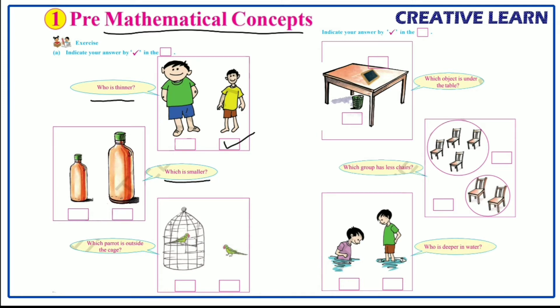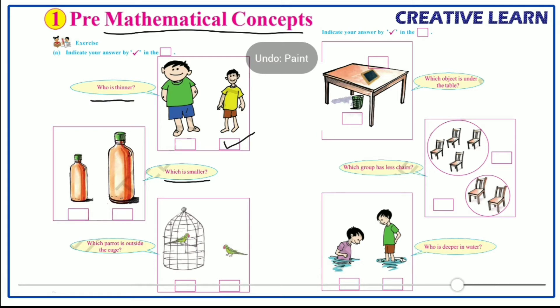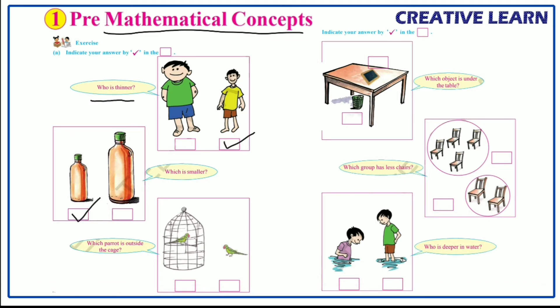Here two bottles are given. From these two bottles, which one is looking smaller? This one — this bottle is looking smaller, so we have to keep the right mark here.